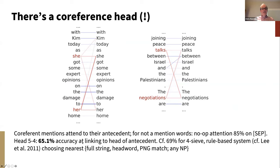Another interesting relation in language is coreference — which words in a sentence refer to the same real-world entity. In 'Kim today has she got some expert opinions on the damage to her home,' Kim, she, and her all co-refer. Head four of the fifth layer captures that with attention. It does that even when it's not a pronoun: 'joining peace talks between Israel and the Palestinians, the negotiations are...' — negotiations and talks are referring to the same thing, and head four picks that up as well.